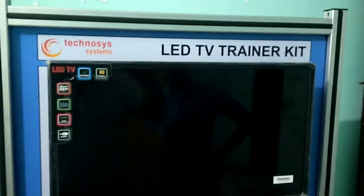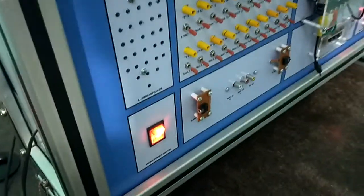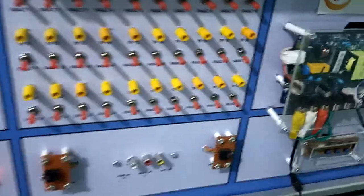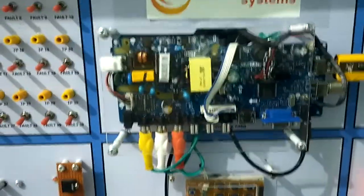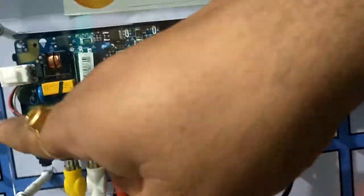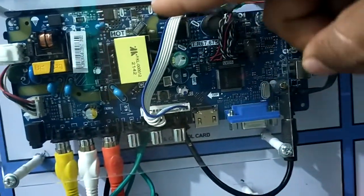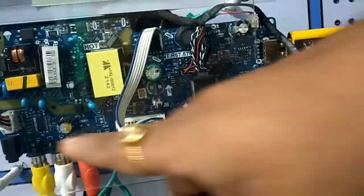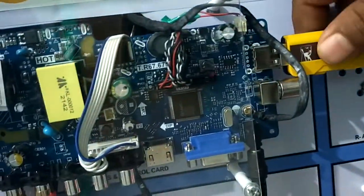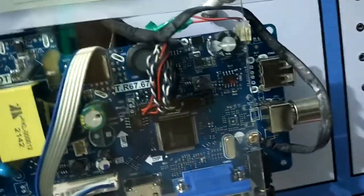Hello and welcome. This is Technosys Systems LED TV trainer. This is the LED panel. Here we can see this is the main control card. This section is the SMPS section and this is the control section.